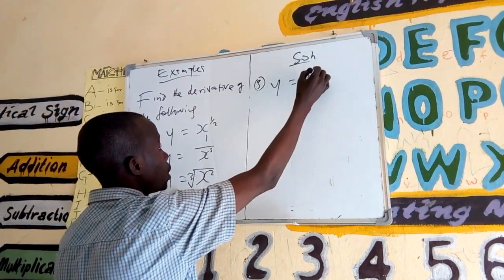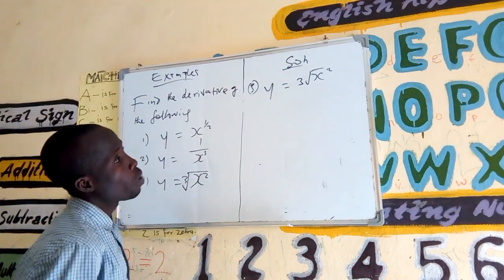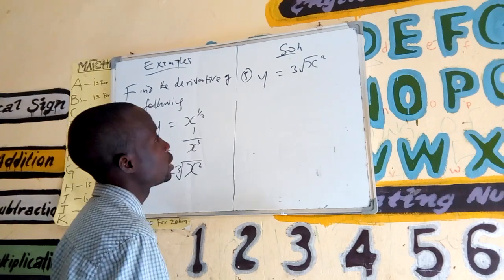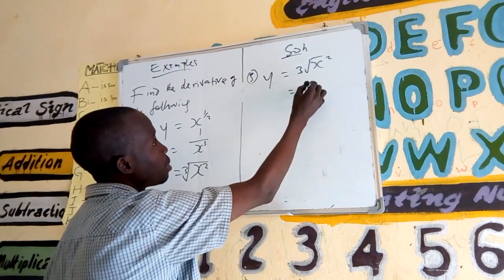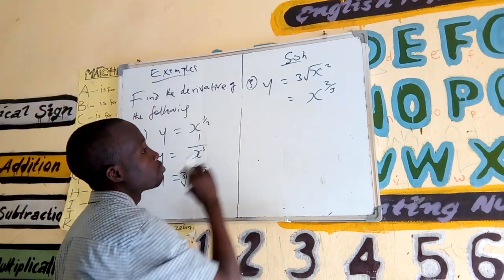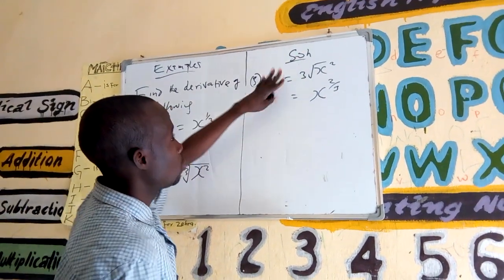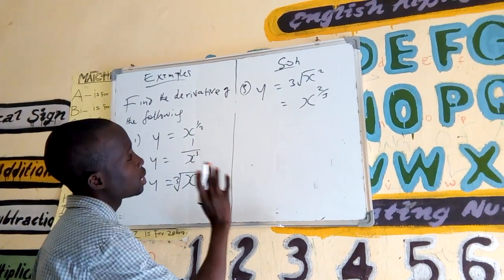If y equals the cube root of x, then it becomes x to the power of 2 over 3. What happens when y equals x to the power of 2 over 3? So, we will find dy by dx.